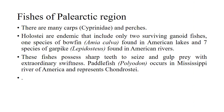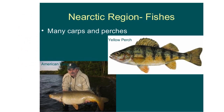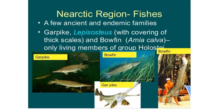Next are the fishes of the Nearctic region. There are many carps and perches. Holostei is an endemic group that includes only two surviving ganoid fish types: one species of bowfin found in American lakes, and seven species of gar-like fish found in American rivers — these possess sharp teeth to seize and gulp prey with extraordinary swiftness. The paddlefish occurs in the Mississippi River and represents a distinct lineage. Pictures show American carp, yellow perch, bowfin, and gar, which are endemic to this region.